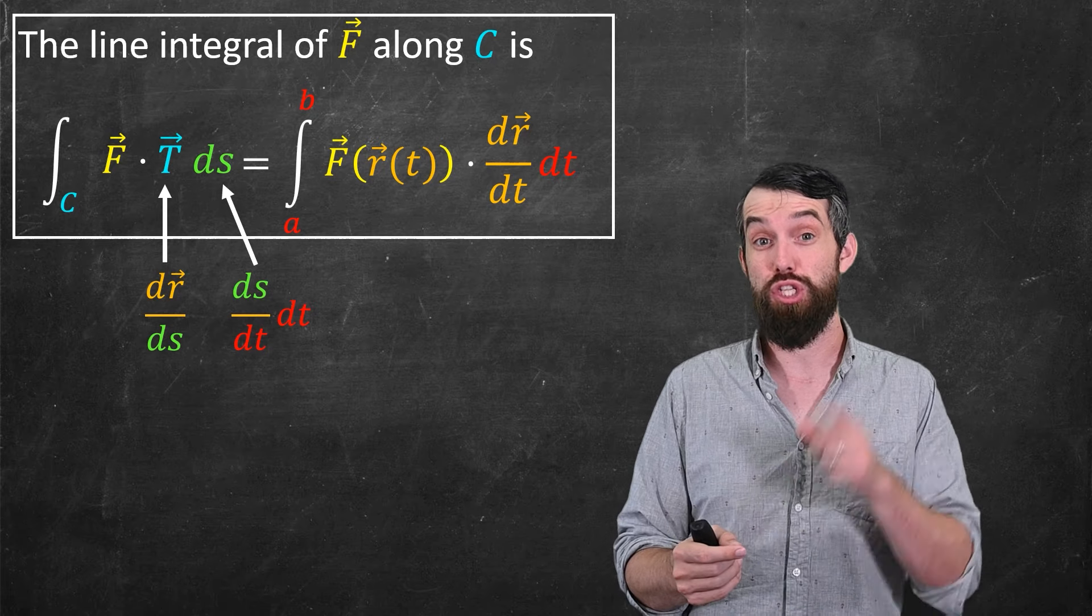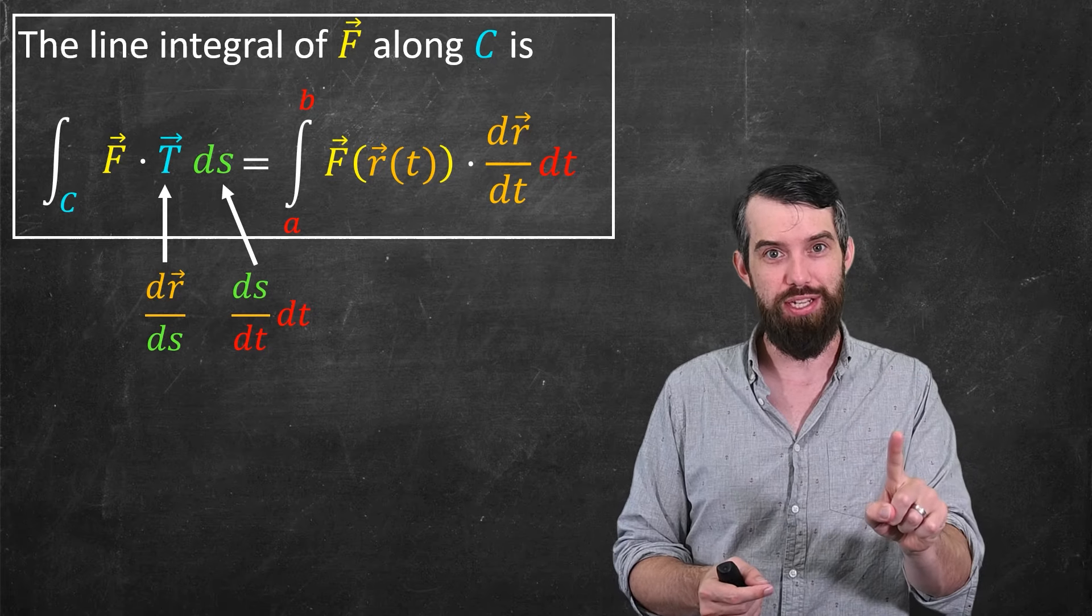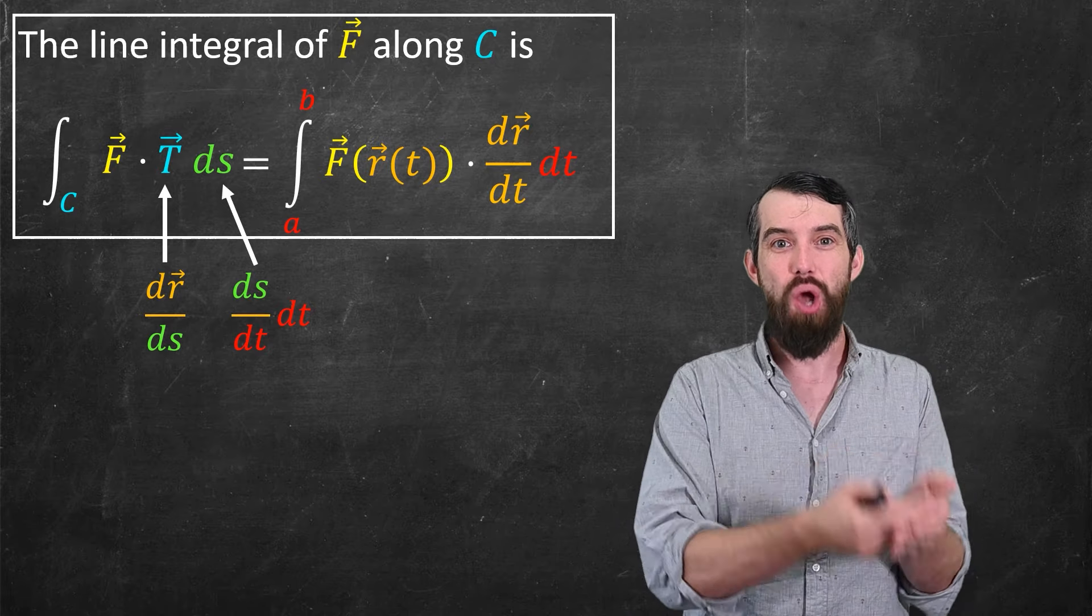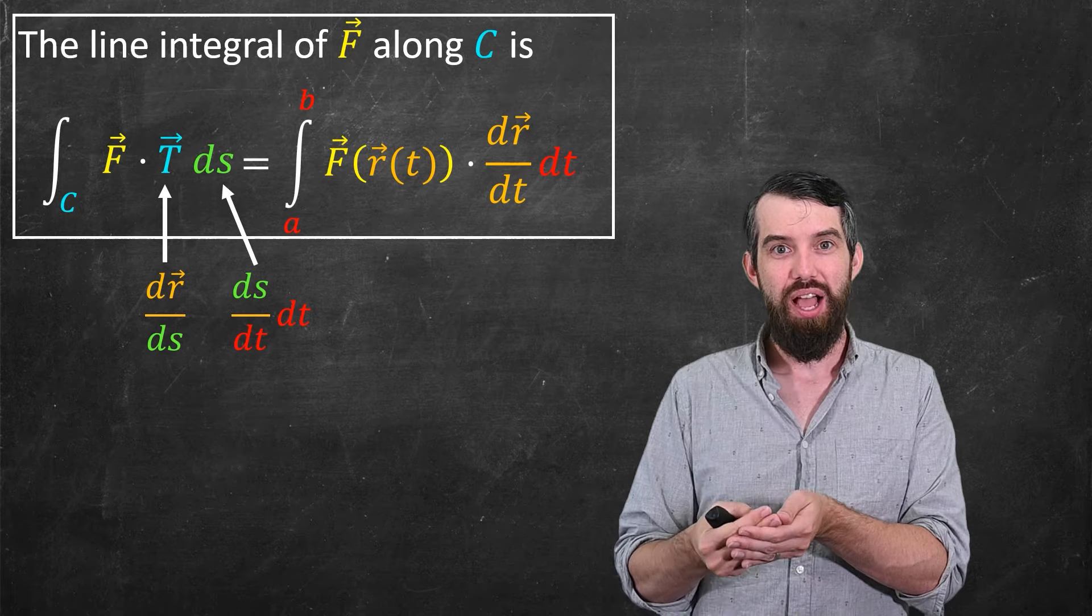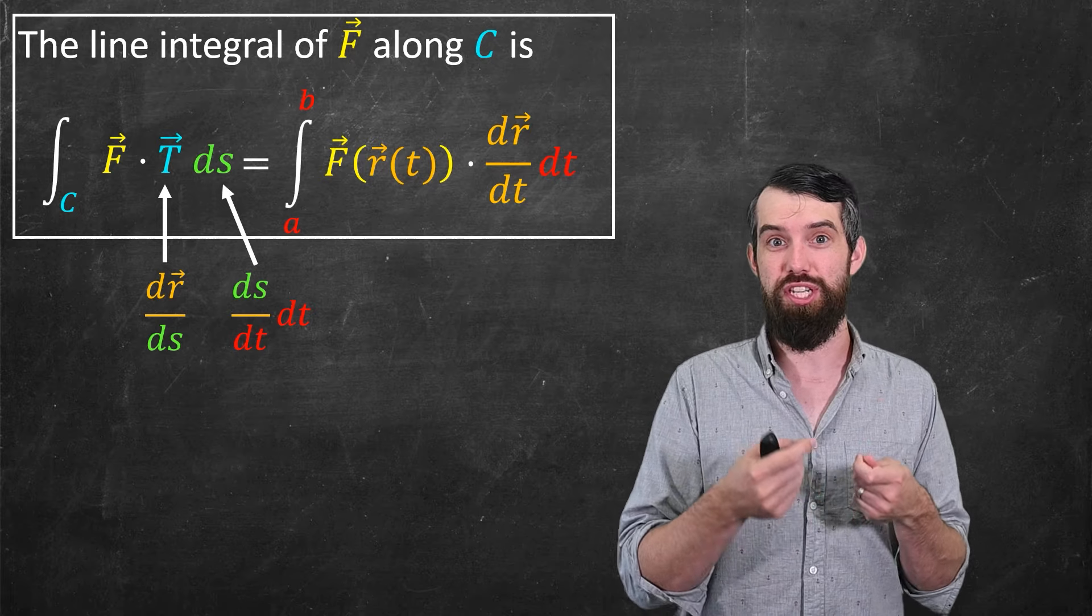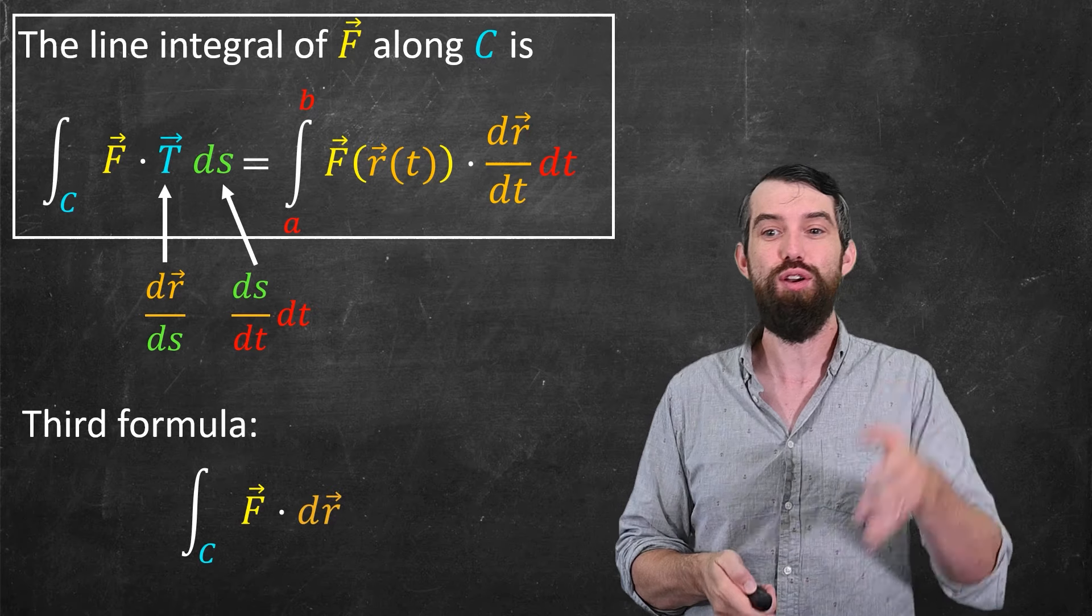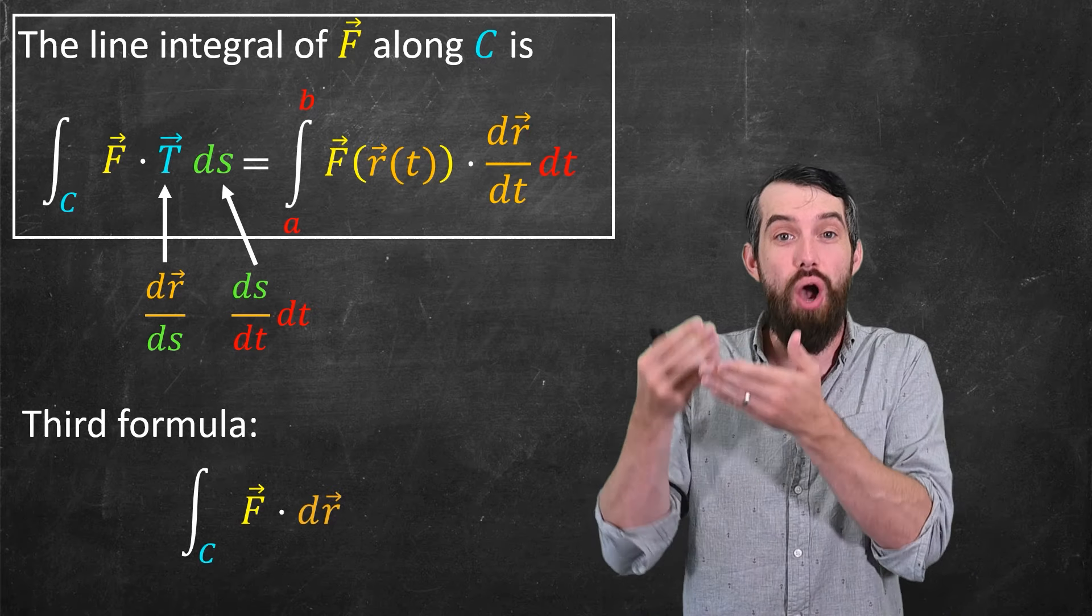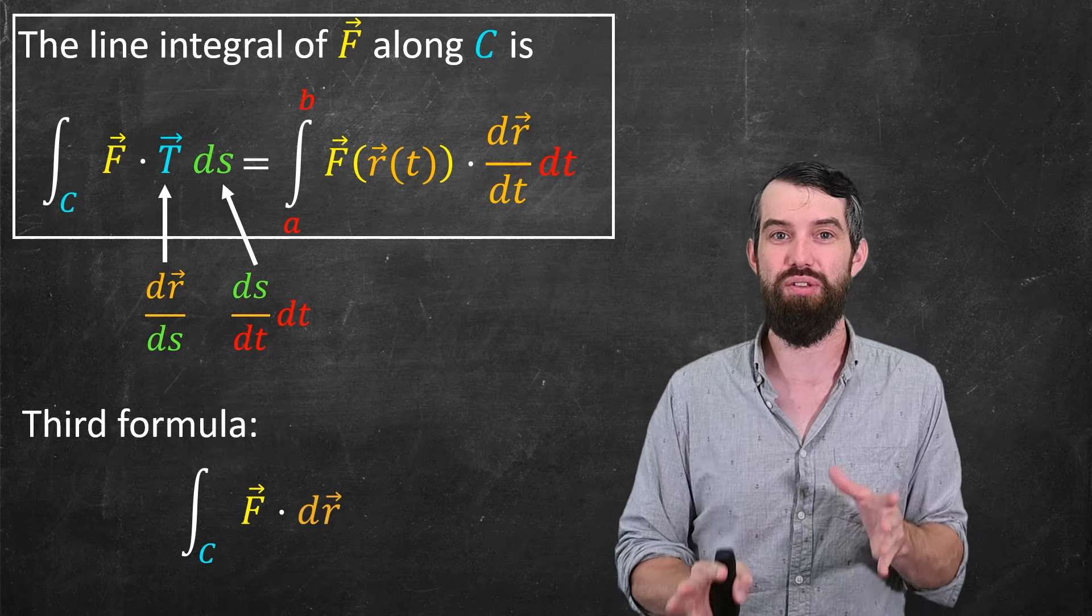But before we end, I want to show you just one more piece of terminology. It's a third way to think about this. If we have this dr/dt dt, I can just define a new symbol, which is just dr, just to be a shorthand for that. And so my third way of writing this is the integral along the curve of f dot dr. And all of these things are the same.